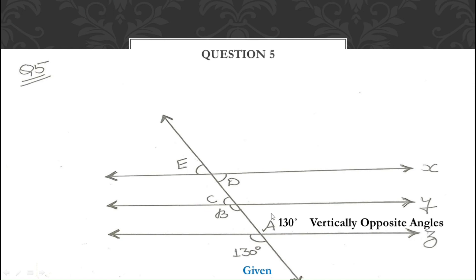Now angle A and angle B are in the interior region of lines Y and Z and are cross angles — they are alternate interior angles. Since alternate interior angles are equal, angle B = 130°. You know that lines Y and Z are parallel and the transversal is cutting them, so angle B = 130° with reason: alternate interior angles.